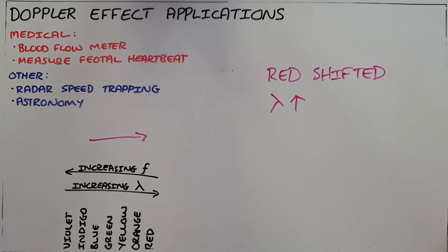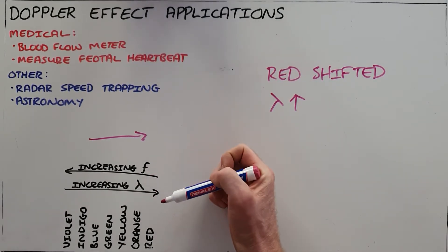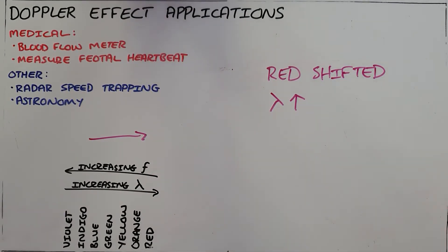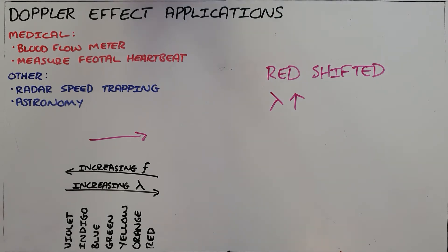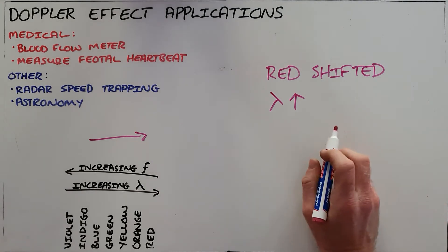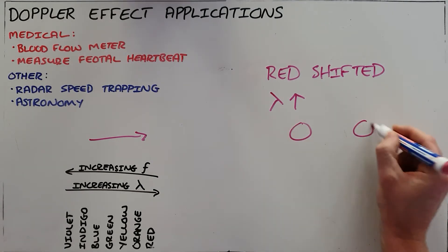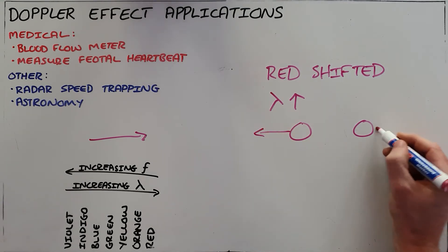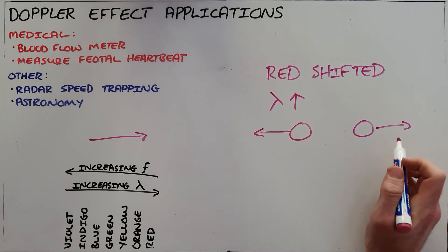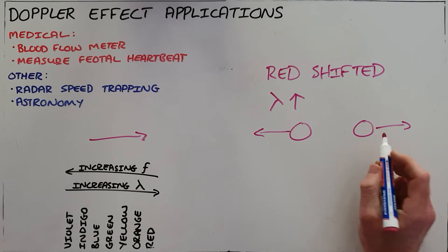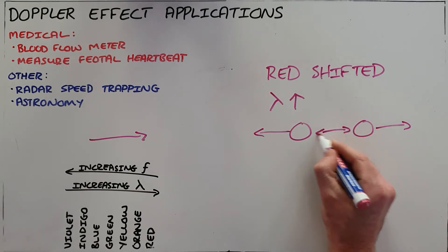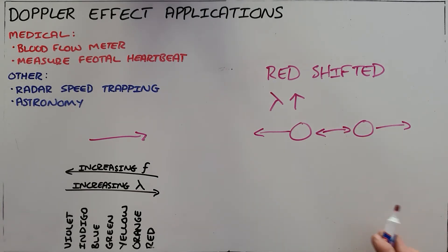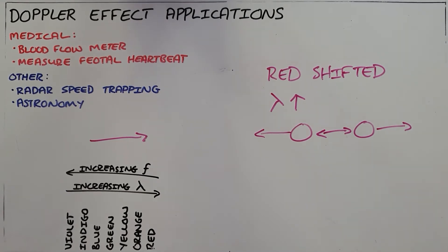Now what that tells us is that increasing wavelength tells us that the frequency has decreased as that wavelength increases and we know that that happens when two objects are moving apart. So when we look at a distant star and we see that light appears to be red shifted, we can then say that those two objects must be moving apart.